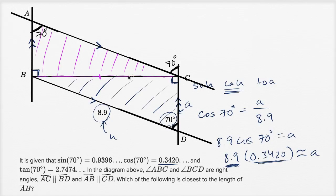So now we've established: this angle is 90, this angle is 90, this angle is 70, this angle is 70. If two angles of a triangle are congruent, the third angle is going to be congruent too — all three have to add up to 180 degrees. So this angle is going to be 180 minus 90 minus 70, which equals 20 degrees. And by the exact same logic, this one also is going to be 20 degrees.